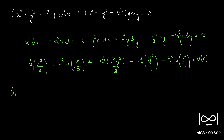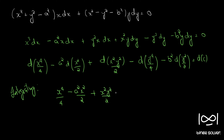Integrating, we have x⁴/4 − a²x²/2 + x²y²/2 − y⁴/4 − b²y²/2 = constant.